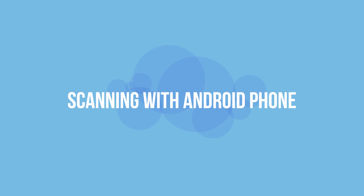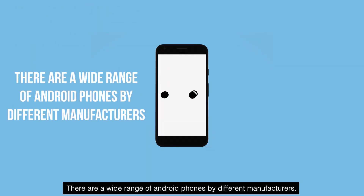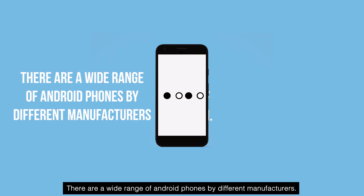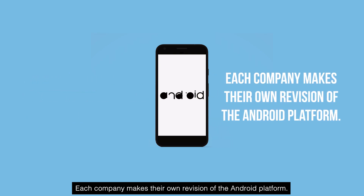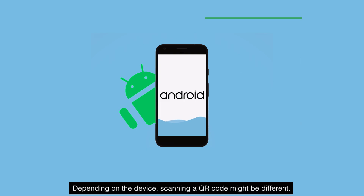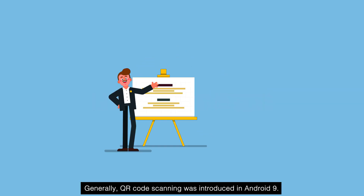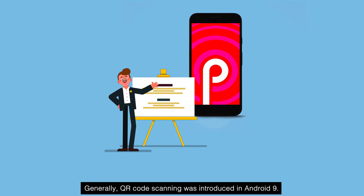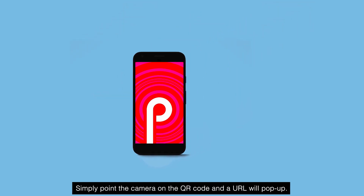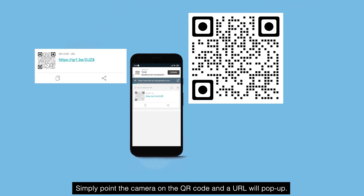Scanning with Android phone: there are a wide range of Android phones by different manufacturers, and each company makes their own revision of the Android platform. Depending on the device, scanning a QR code might be different. For latest Android devices, QR code scanning was generally introduced in Android 9 — simply point the camera on the QR code and a URL will pop up.